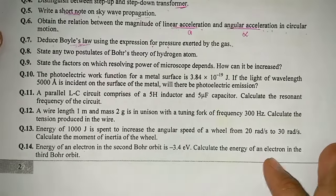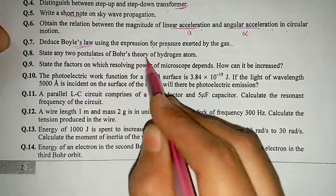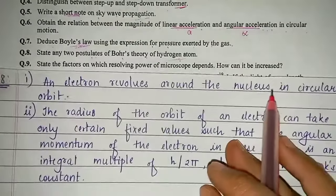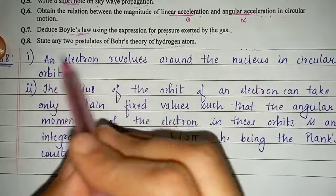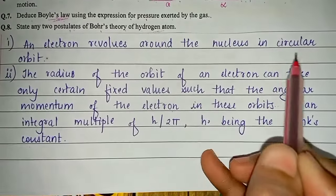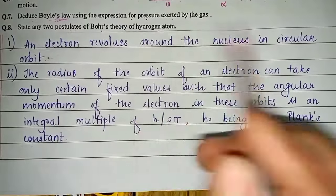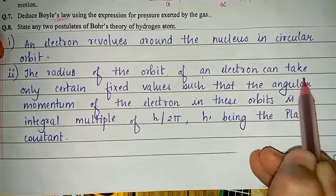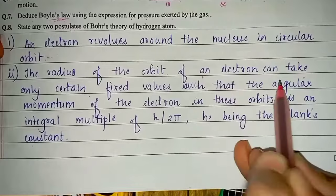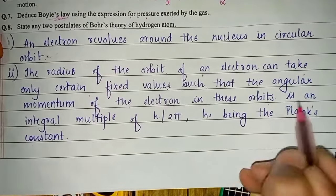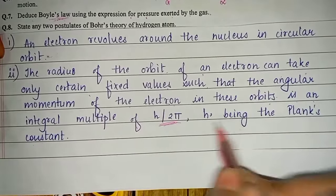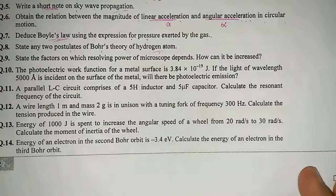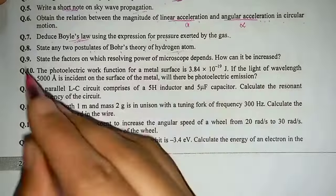Question number 8: state any two postulates of Bohr's theory of hydrogen atom. First postulate: an electron revolves around the nucleus in a circular orbit. Second postulate: the radius of orbit can take only certain fixed values such that the angular momentum of the electron is an integral multiple of h/2π, where h is Planck's constant.